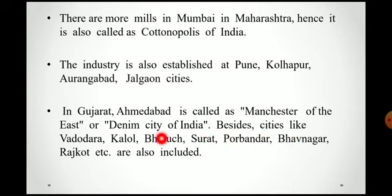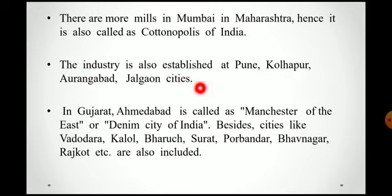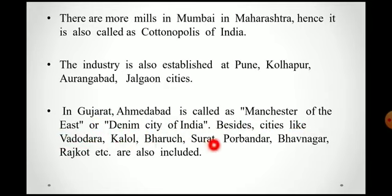Besides Ahmedabad, cities like Vadodara, Kalol, Bharuj, Surat, Porbandar, Bhavnagar and Rajkot are also included in Gujarat as cotton textile centres. In Maharashtra state, cities like Pune, Kolapur, Aurangabad and Jalgaon have cotton textile industries. In Gujarat state, districts like Vadodara, Kalol, Bharuj, Surat, Porbandar, Bhavnagar and Rajkot are the districts having cotton textile industries.